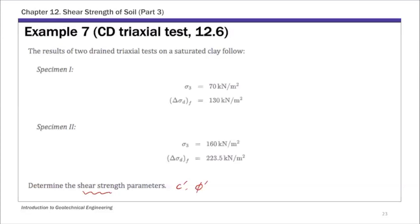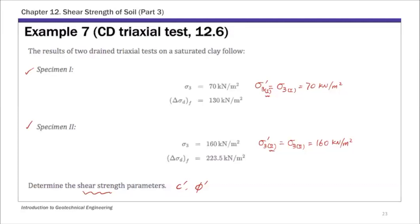This is actually an over-consolidated clay specimen. That's why you have two specimens prepared, and you have these two sets of results. For specimen 1, this is the confining stress, sigma 3. During the triaxial test, total and effective stress are the same, so sigma 3 prime and sigma 3 are the same. I'm using subscripts 1 and 2 to indicate association with specimen 1 or 2. So that's your confining stress. The deviator stress at failure is also given for both specimens, and we're going to calculate these two strength parameters.